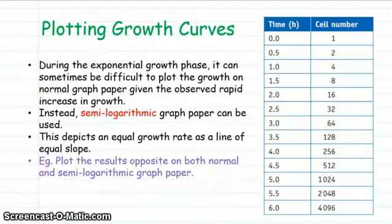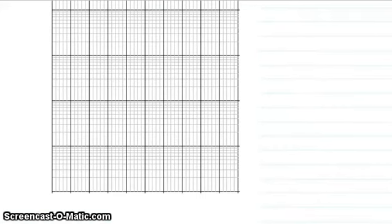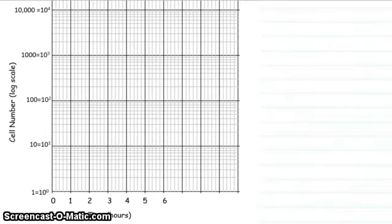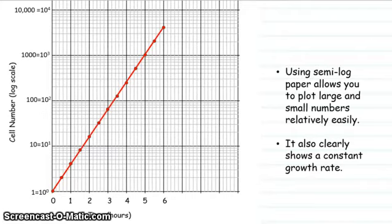We are able to plot growth curves using a semi-logarithmic method, which allows us to show the growth rates as differences in the gradients of the slope. If we were to plot growth rate from the table on semi-logarithmic graph paper, that growth rate would be shown as a straight line.